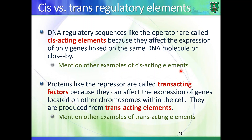Enhancers are also cis-acting elements, with a twist: if you take enhancers and change their location, they can still be functional. But if you put them very far away from the gene, or on a different chromosome, they would no longer be functional. Think about other examples of cis-acting elements from the previous lecture on transcription.